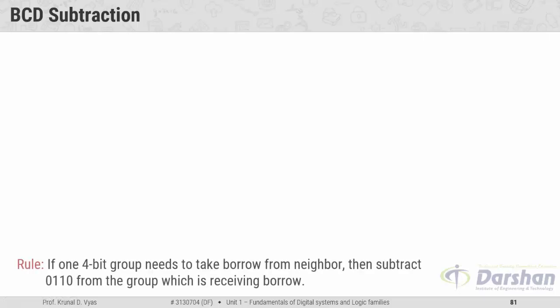BCD subtraction rule: if a 4-bit group needs to take a borrow from its neighboring group, then you have to subtract 0110 from that particular group which is receiving the borrow. Let us take one example to elaborate this method.